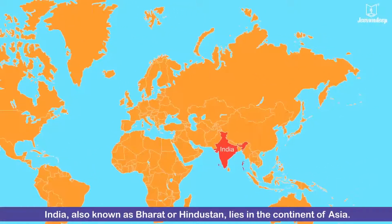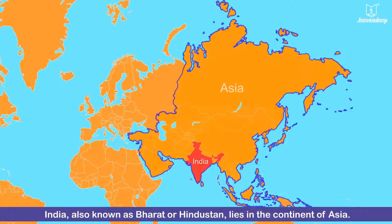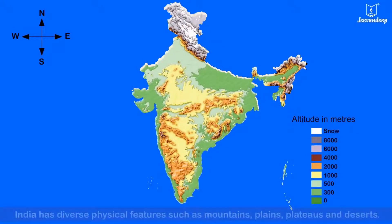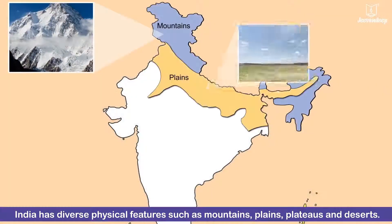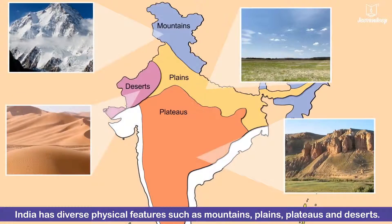India, also known as Bharat or Hindustan, lies in the continent of Asia. Being a vast country, it has diverse physical features such as mountains, plains, plateaus and deserts.